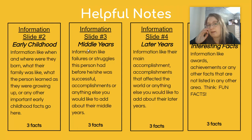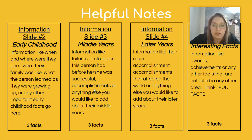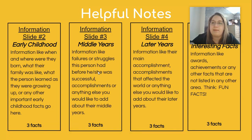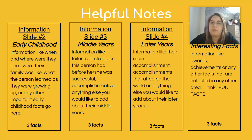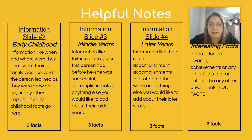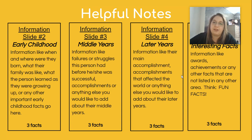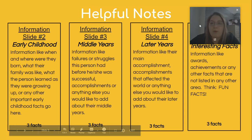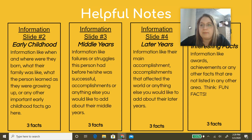Information slide number three is middle years — information like failures or struggles this person had before they were successful, accomplishments, or anything else you'd like to add about their middle years. This is mostly about building up to when they became a famous historical figure — kind of like college time, self-discovering themselves. Slide four covers later years: their main accomplishment or accomplishments that affected the world, why they are famous, and why we still study and learn about them in history today.